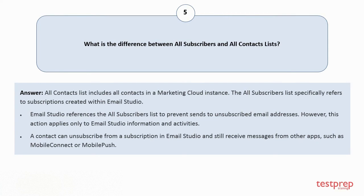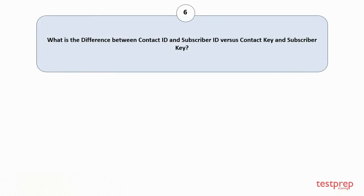However, this action applies only to Email Studio information and activities. Third, a contact can unsubscribe from a subscription in Email Studio and still receive messages from other apps such as Mobile Connect or Mobile Push. Question number six: what is the difference between Contact ID and Subscriber ID versus Contact Key and Subscriber Key?